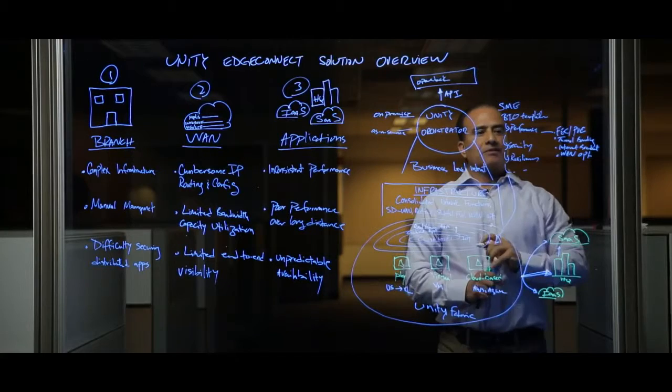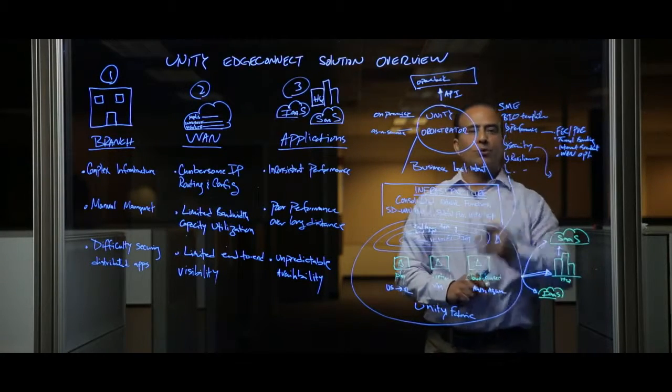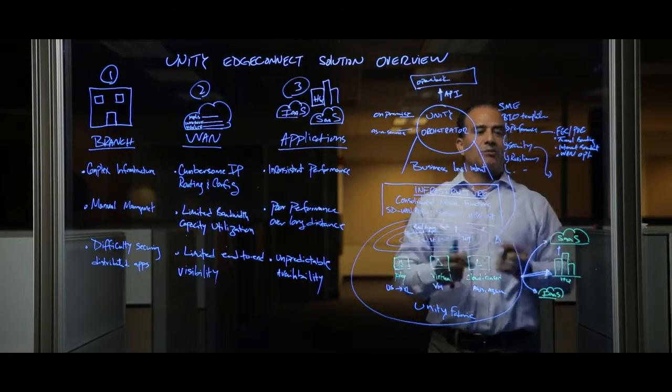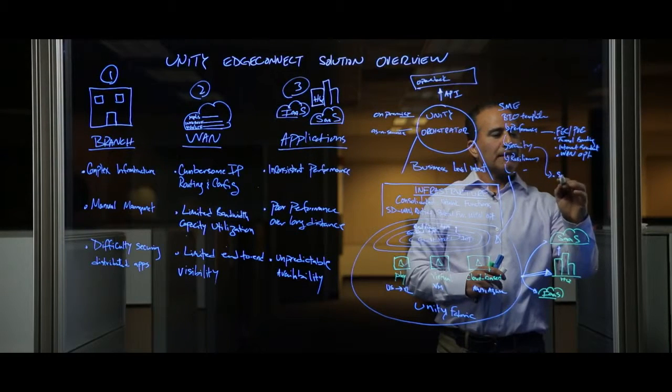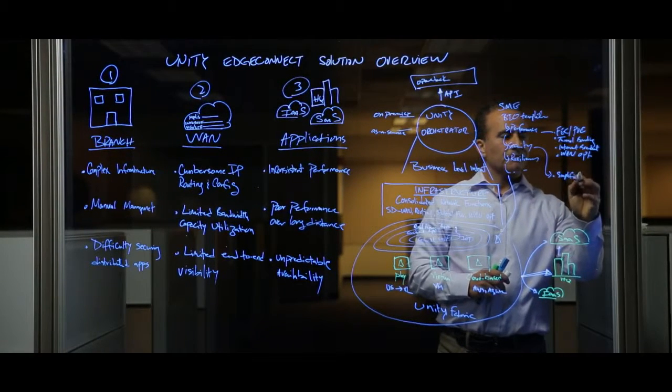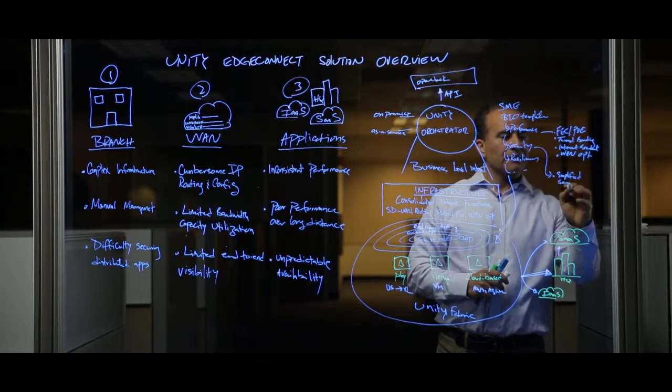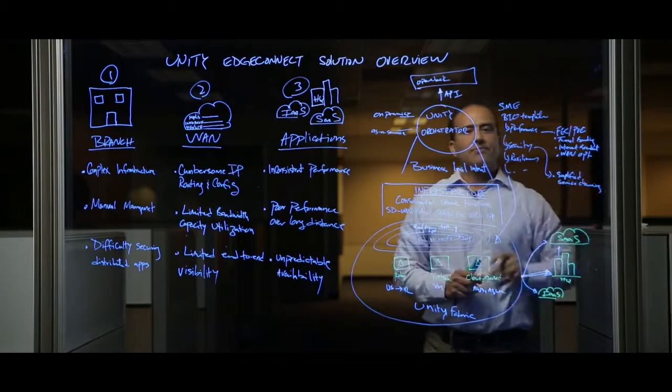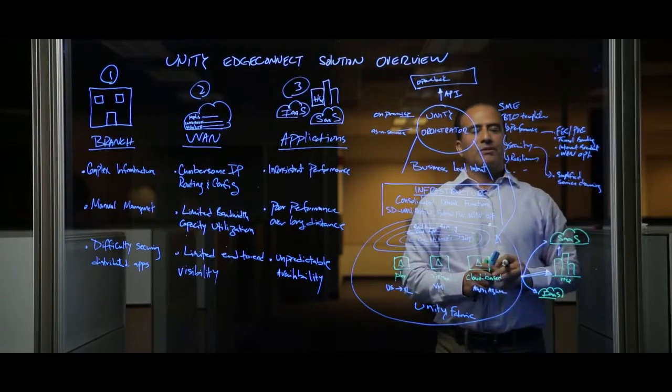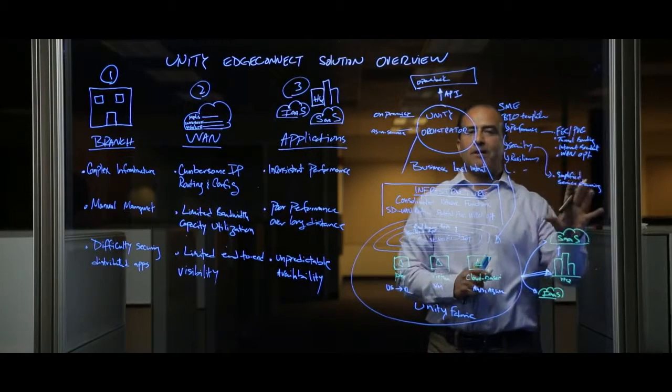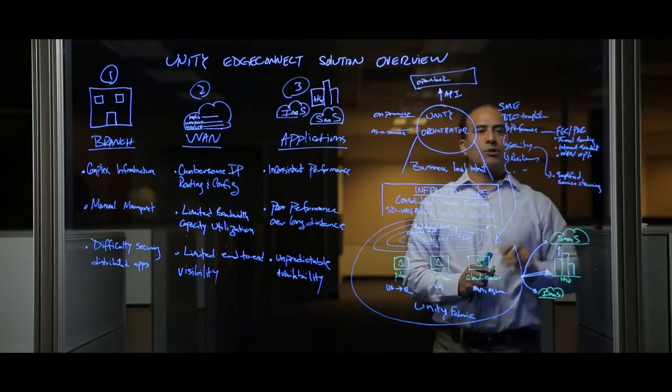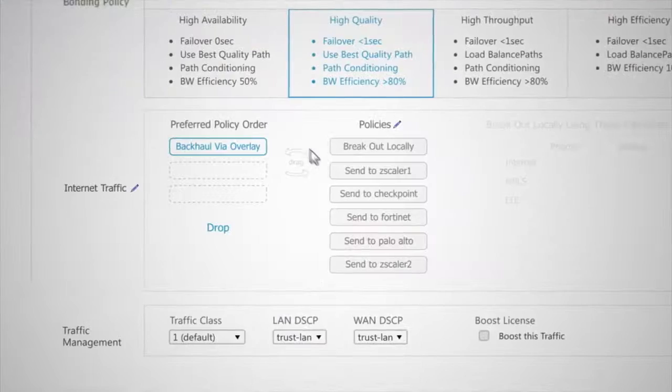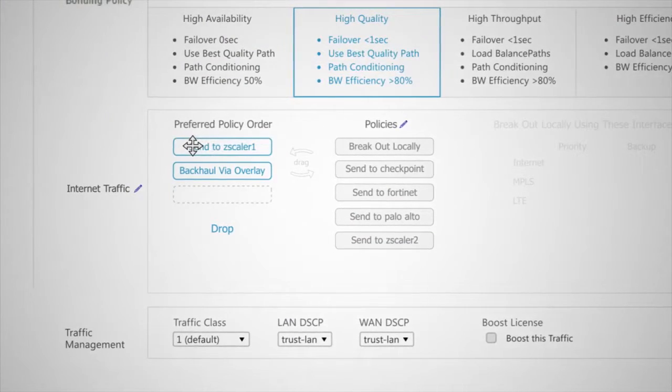The other aspect is around security. So with security, we have two components that is key to simplify pushing the policies to these distributed applications. So the first thing is the simplified service training. So we have verified our solution to work with next-generation firewall companies like Palo Alto Networks, Fortinet, Checkpoint, as well as cloud-based gateways where now you can simply do a drag-and-drop from the business intent overlay for securing that specific application.